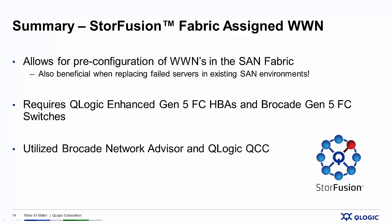In summary, StoreFusion's Fabric Assign Worldwide Name feature allows a SAN administrator to pre-configure the entire SAN without having all of the physical pieces in place — servers and fiber channel adapters don't need to be present — saving lots of time and simplifying the overall project. A secondary benefit is that if a server fails, you can wheel in a new server, plug it into the SAN, and assuming you have QLogic Enhanced Gen5 Fiber Channel HPAs, the HPA will read the Fabric Assign Worldwide Name and you'd be up and running in minutes — no reconfiguration of the SAN required.